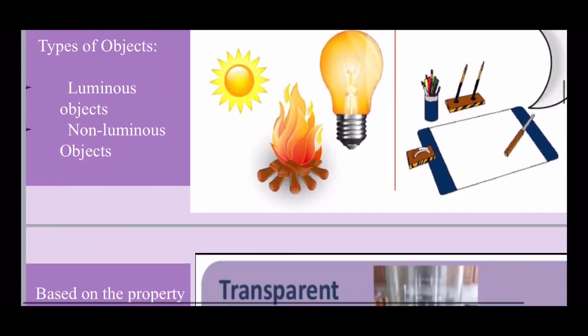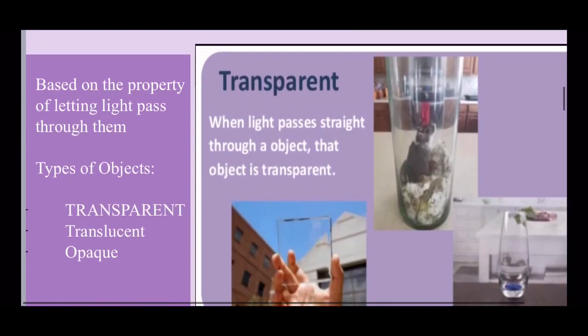The next classification is based on the property of letting light pass through them. Here we have classified objects in three parts: transparent, translucent, and opaque. Transparent objects allow most of the light to pass through them. For example, a sheet of glass, clean air, clean water, vacuum, diamond, cellophane.